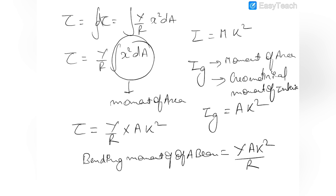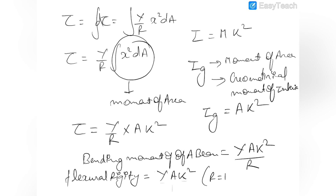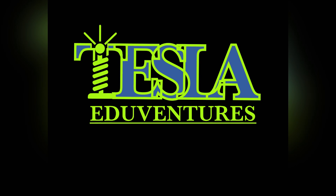There is another important term called flexural rigidity. Flexural rigidity is defined as the bending moment required to create a unit radius of curvature of the neutral line — that is, when r equals one. So flexural rigidity equals gamma times A times k squared. This is the bending moment required to bend the beam such that the radius of the neutral line is unity.